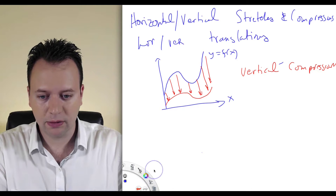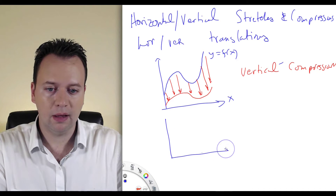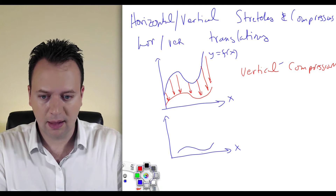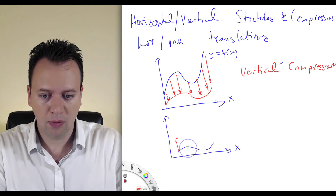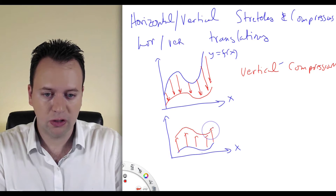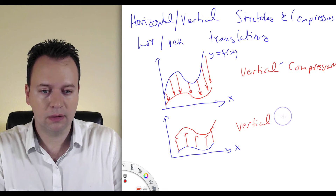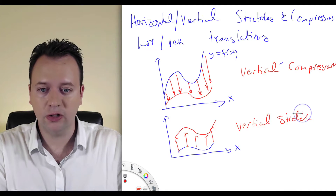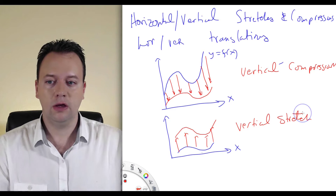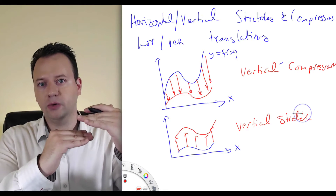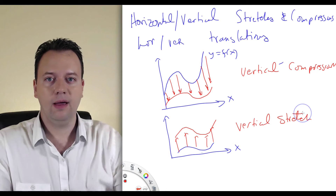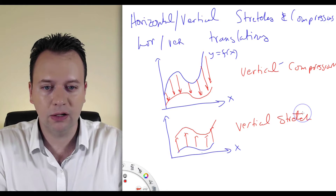Now the opposite: if you start with a function like this and then pull it away from the x-axis to get a new function, that's a vertical stretch. So literally, a compression means you're taking the outputs and squeezing them down towards the x-axis, and for the stretch you're pulling the graph away from the x-axis.